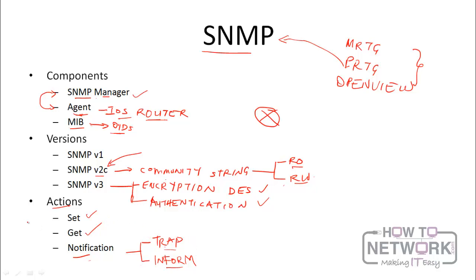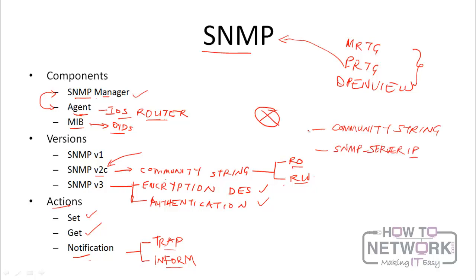So generically, that's how SNMP works. All you need to do when configuring SNMP is two things: configure the community string and configure the SNMP server IP address. Both the manager and agent will communicate on UDP port 161.